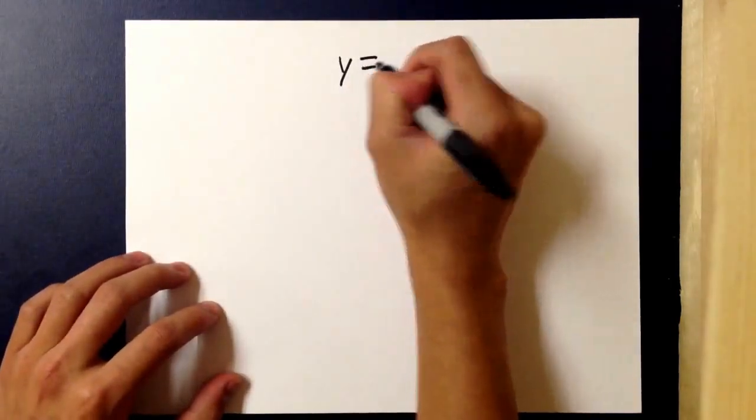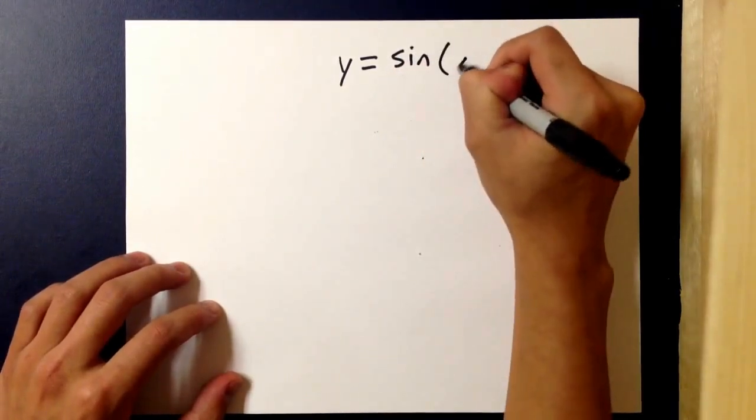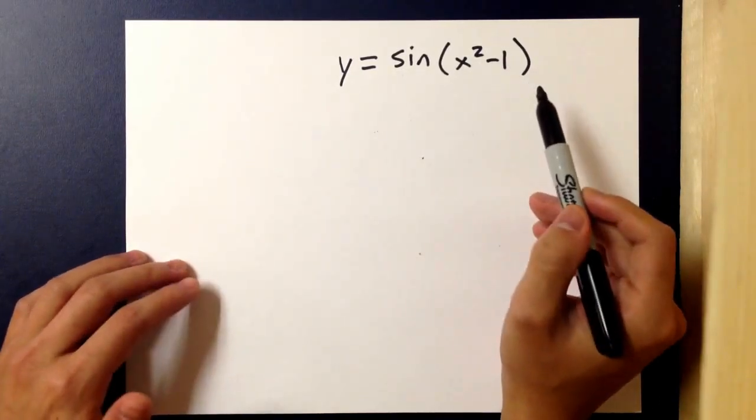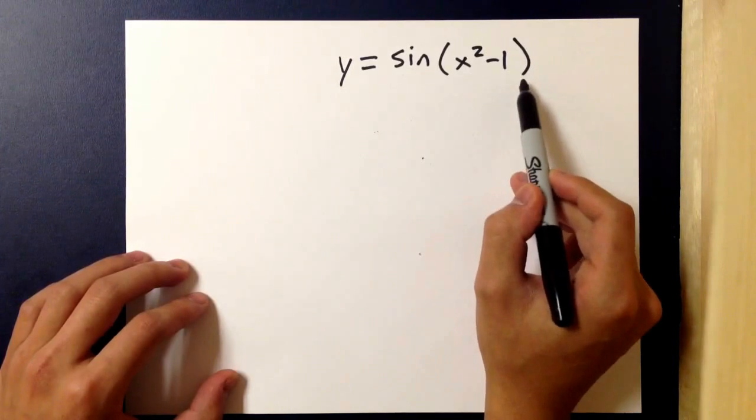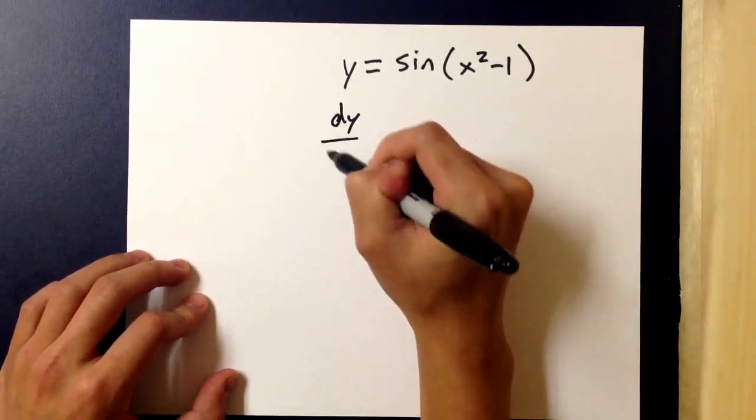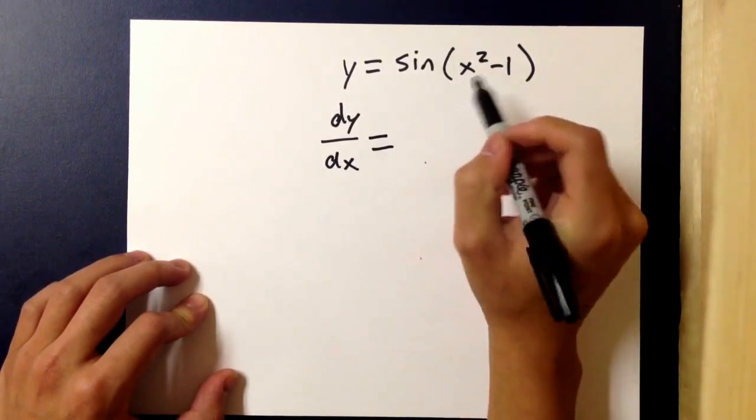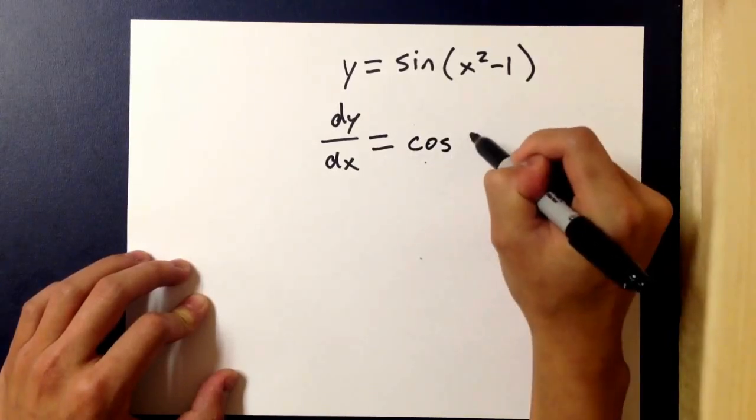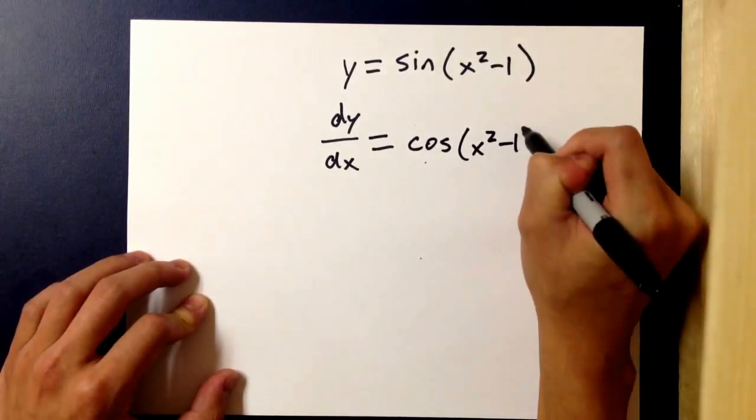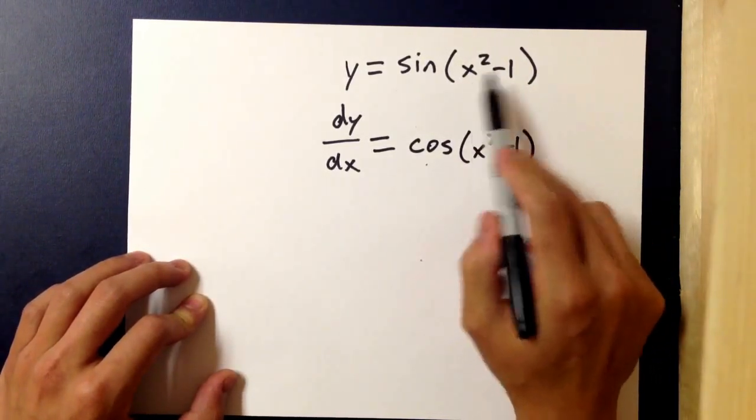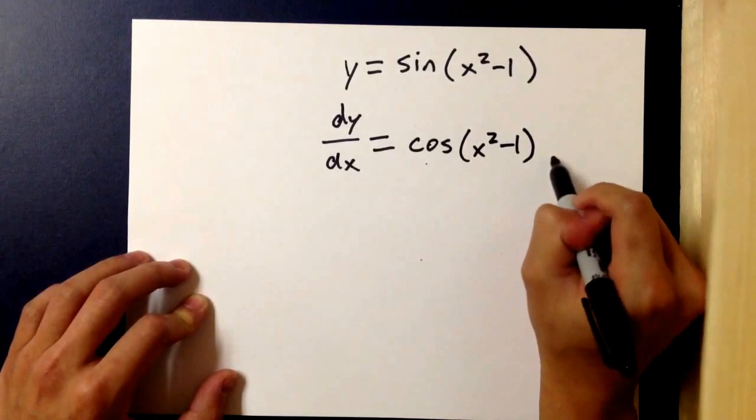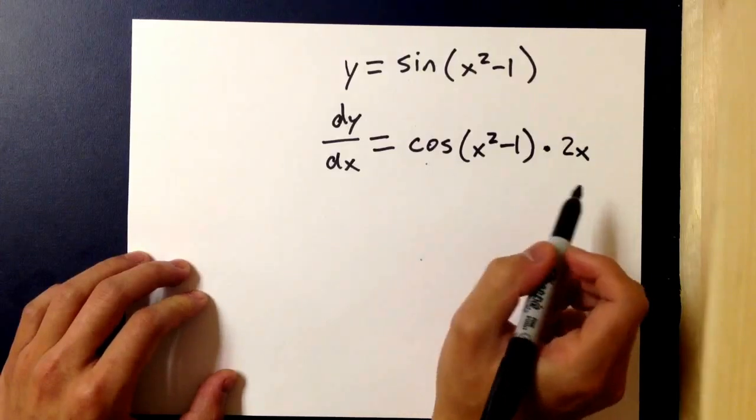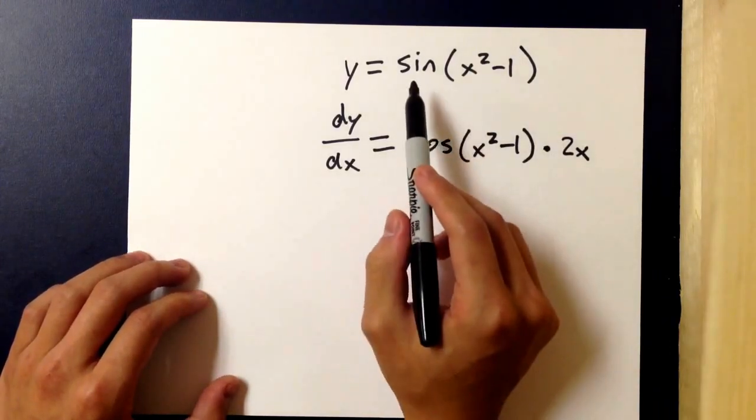An example would be y equals sine of x squared minus 1, where sine is the outer and x squared minus 1 is the inner. The derivative using the chain rule would be the derivative of the outside, so the derivative of sine is cosine, and the inner stays the same, so it's still x squared minus 1, multiplied by the derivative of the inside. The derivative of x squared minus 1 using the power rule is 2x, and just like that we found the derivative of this which would have been very complicated using the limit definition.